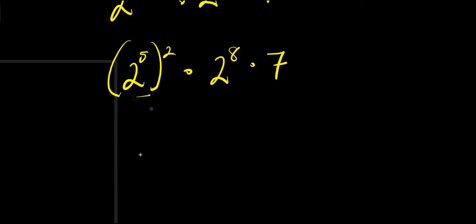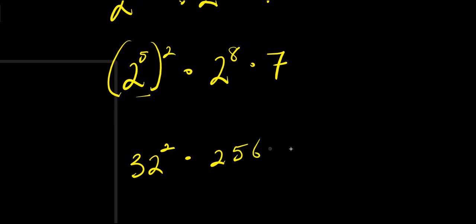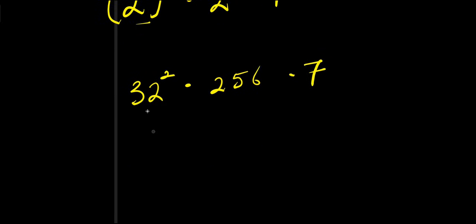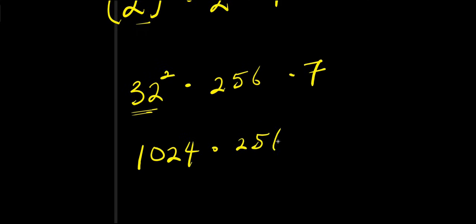2 power 5 is 32. Then 2 to the power 8 is 256. We have 32 squared, that is 32 times 32 equals 1024. So we have 1024 times 256 times 7.